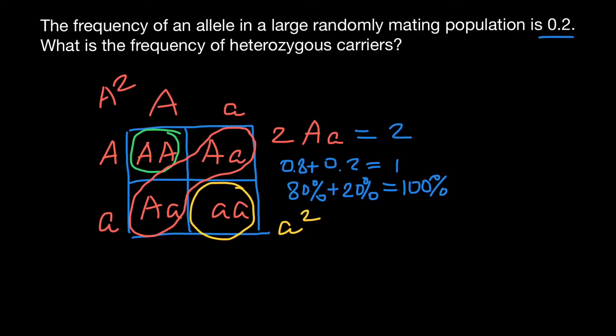So now we can use these numbers. So 2 multiplied by 0.8 multiplied by 0.2, and our answer is going to be 0.32.